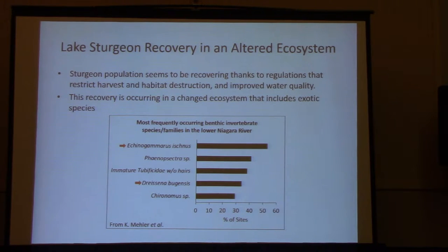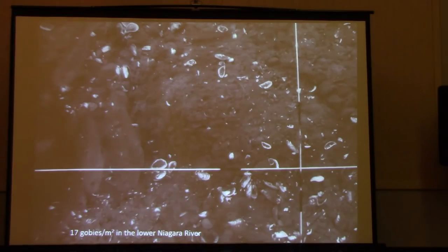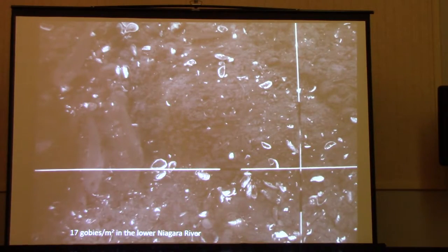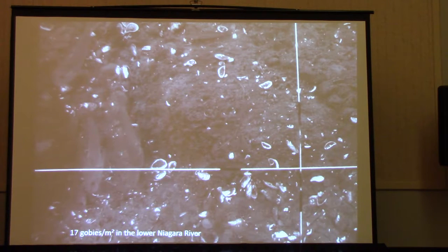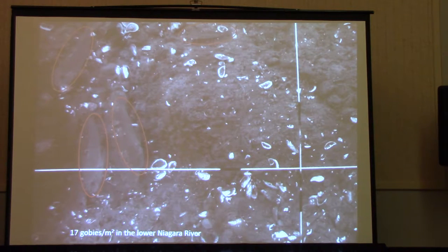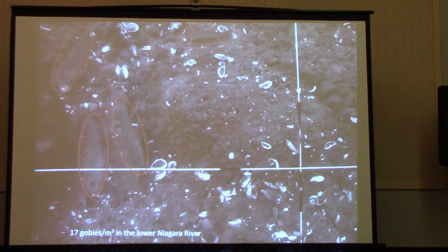We're wondering how this sturgeon population is utilizing these invasive species. Another invasive species I'm going to talk mostly about is round goby. This is a still from a video graphic assessment that Dr. Panuto and Dr. Mailer did — there are at least four gobies visible here. They estimated on average about 17 gobies per meter squared in the lower river, and 22 gobies per meter squared in nearshore Lake Ontario. Pretty high numbers — not 100 per meter squared like we heard earlier, but still pretty high.